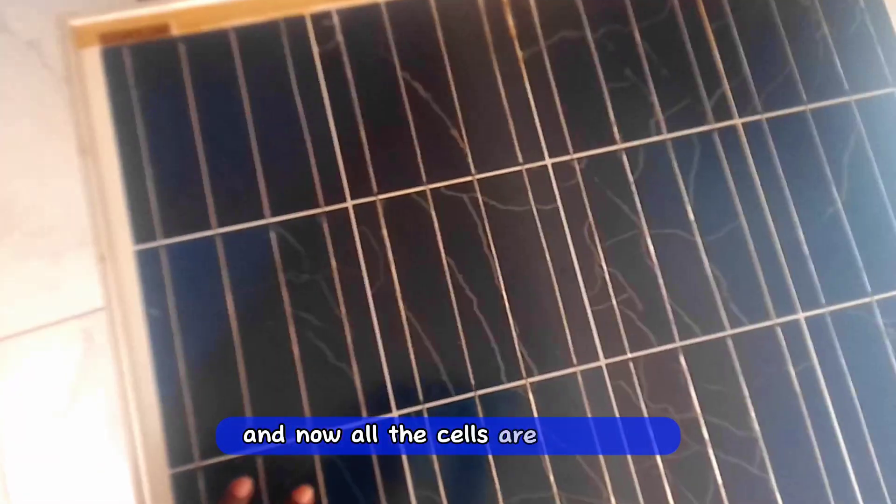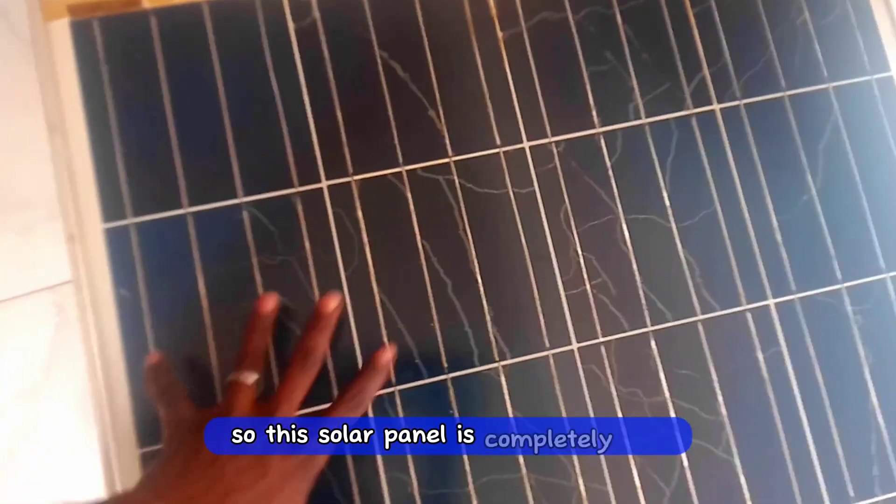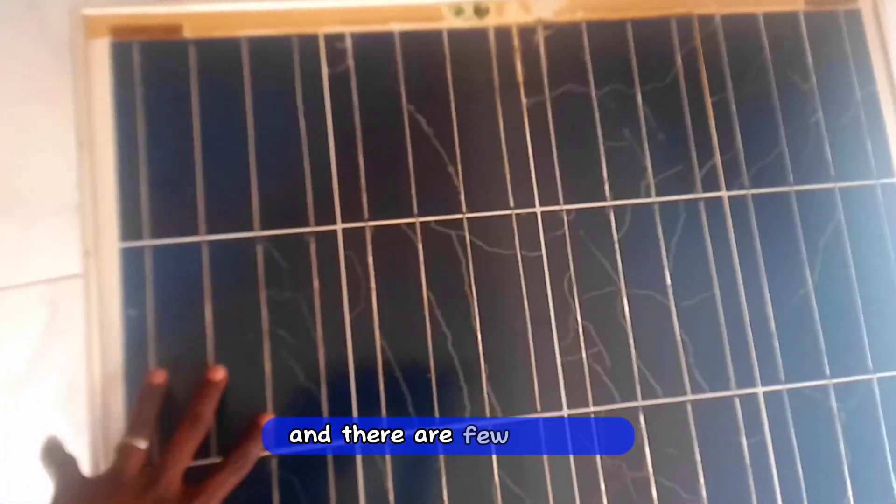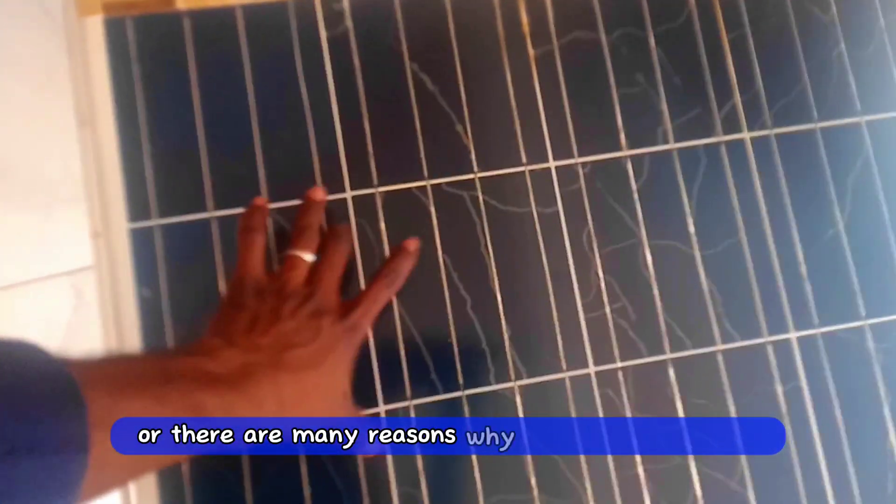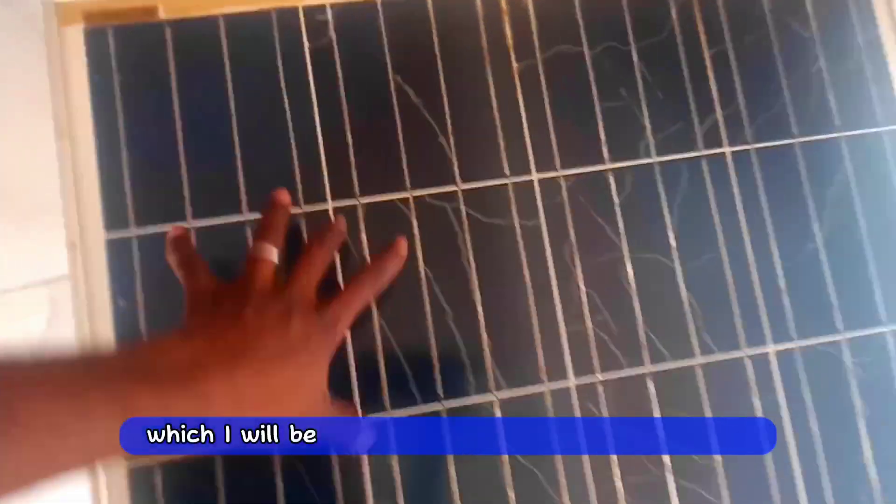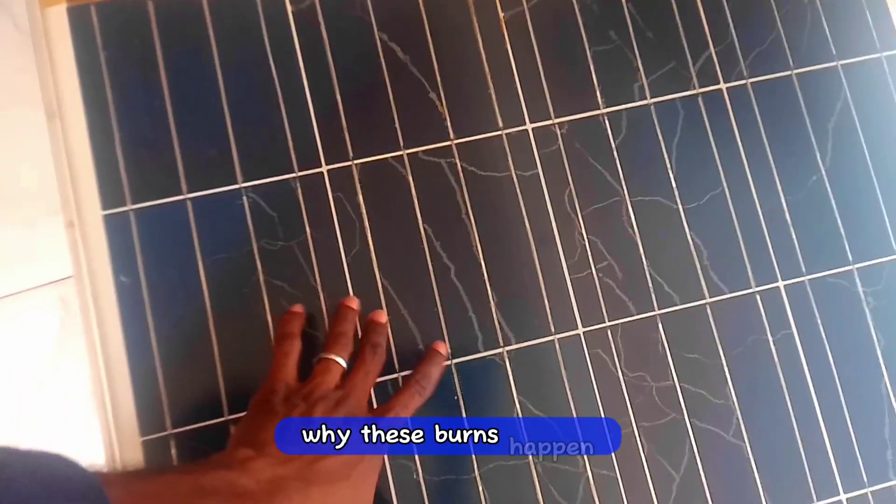And now all the cells are affected, so this solar panel is completely bad. There are many reasons why these burns happen, which I will be telling you - like four or five reasons why these burns happen.